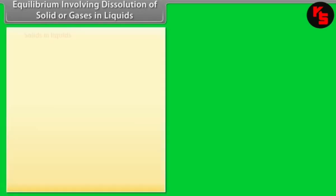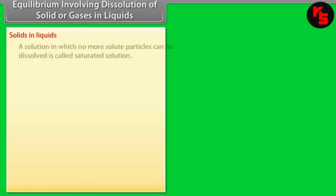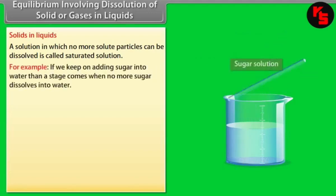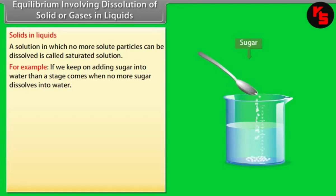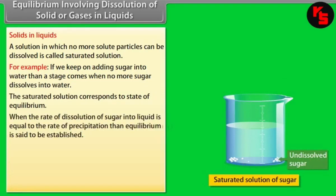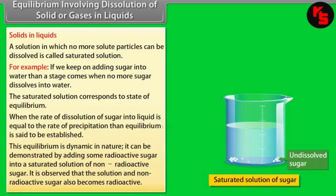Equilibrium Involving Dissolution of Solid or Gases in Liquids — Solids in Liquids. A solution in which no more solute particles can be dissolved is called a saturated solution. For example, if we keep on adding sugar into water, a stage comes when no more sugar dissolves. The saturated solution corresponds to a state of equilibrium when the rate of dissolution of sugar equals the rate of precipitation.